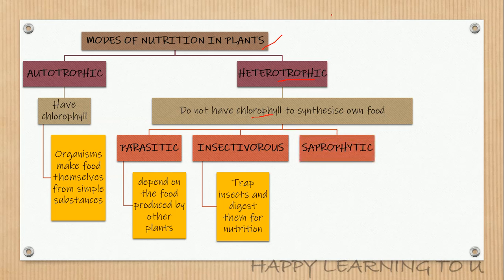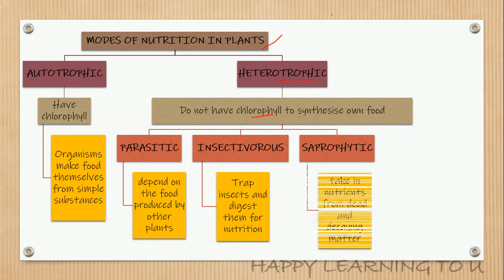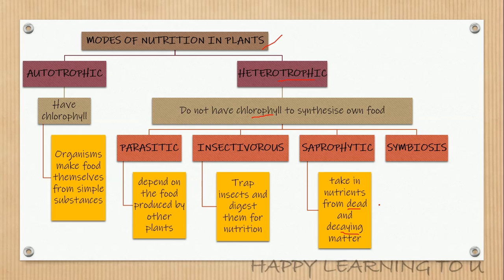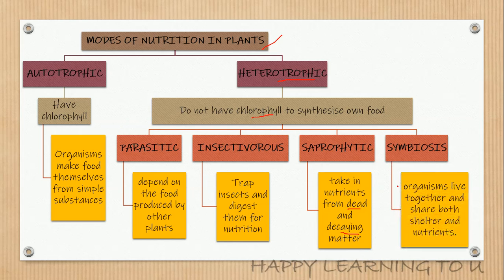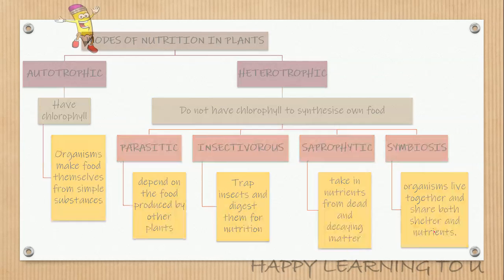Or they may be saprophytic, wherein they take nutrients from dead and decaying matter. The fourth heterotrophic mode of nutrition is symbiosis, wherein organisms live together and share shelter and nutrients — one provides shelter, the other provides nutrients — so they benefit each other. That is symbiosis, and this is all I had for today's introductory video.